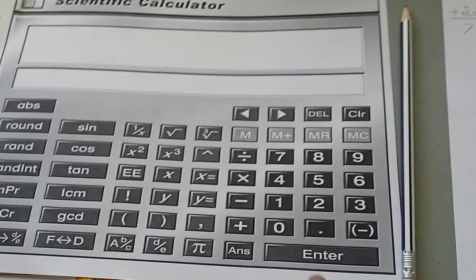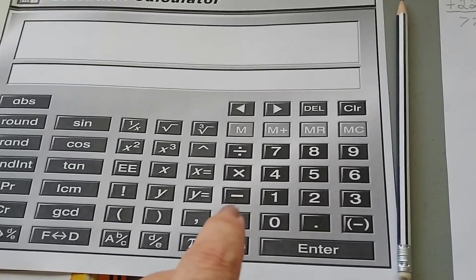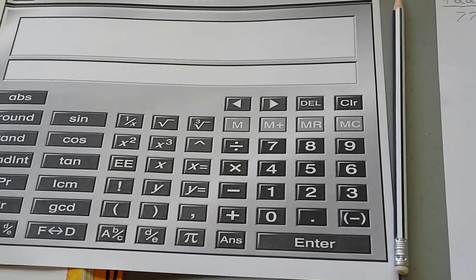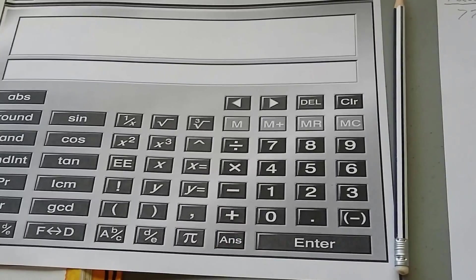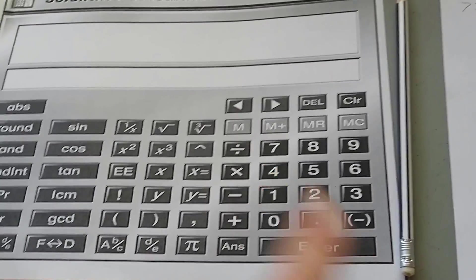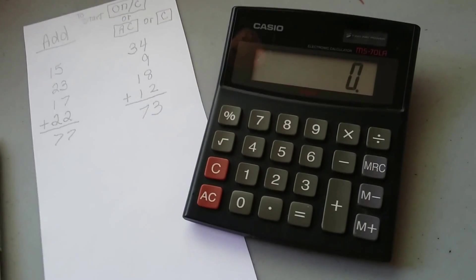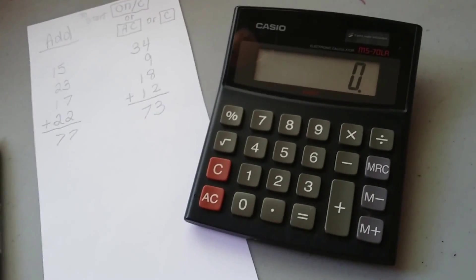There's even scientific calculators that you're going to use in middle school and high school that have lots of buttons. But you can still see the basic ones. Here's the numbers. Here's the plus sign and the minus sign. So it's got a lot of the same buttons as a regular plain calculator.